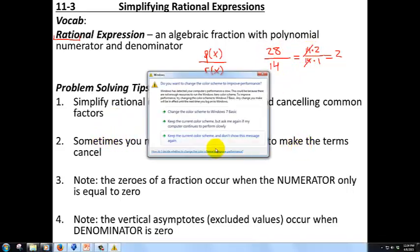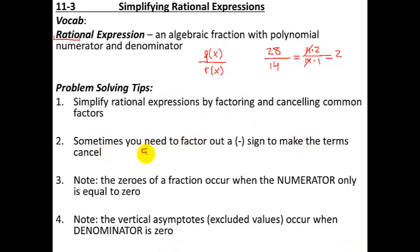Sometimes you need to factor out a minus sign to make the terms cancel. So in the numerator, you might have 5 minus x, and in the denominator, you might have x minus 5. Well, those are technically not identical. Let's put parentheses around them. They're not identical. But if you factor a negative sign out of the numerator, you get negative of negative 5 plus x over x minus 5. And now this part in parentheses, x plus a negative 5 is the same as x minus 5. These two cancel, and the answer is just negative 1. So if you have terms that are just off by a minus sign, you can factor out a minus sign and then cancel them out.